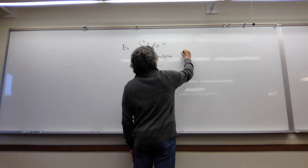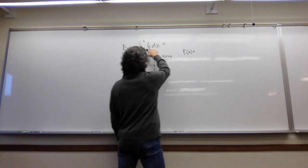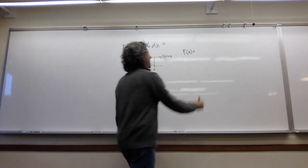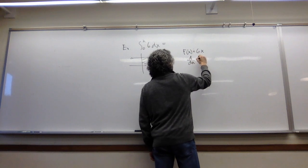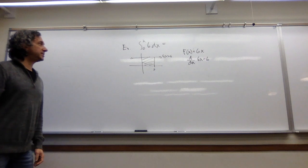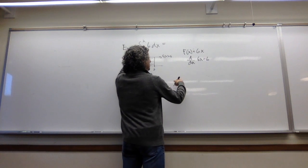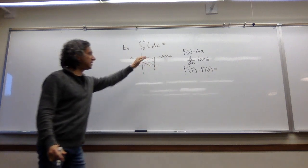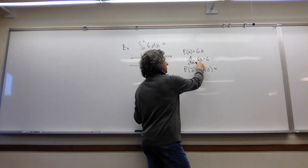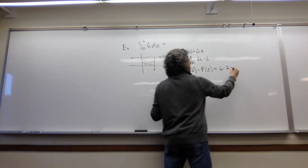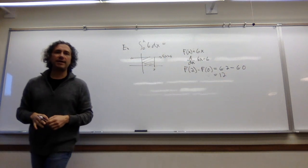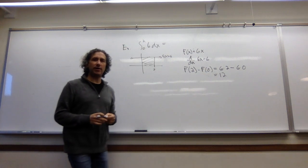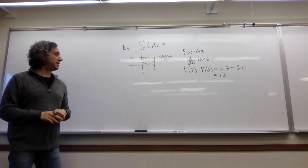So now let's use FTOC part one. Can we think of a function whose derivative is 6? Let me give you a second to think about that. Hopefully you're saying 6x, right? The derivative of 6x is 6. So by the fundamental theorem of calculus part one, all I need to do is plug in a 2, plug in a 0, and subtract, and I should get the area of this thing. Well, does it work? 6 times 2 is 12, minus 6 times 0, and we get 12. We get the right answer. Again, that should be shocking because I'm finding the area of something just by subtracting these two values.